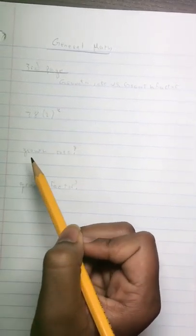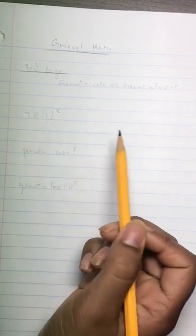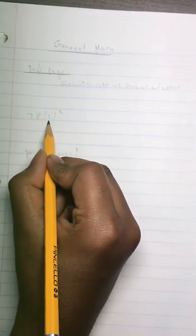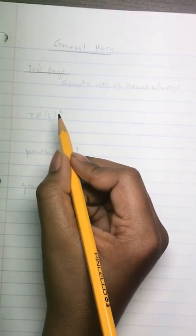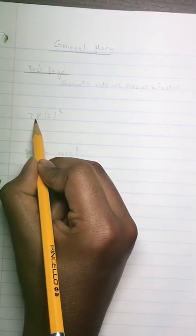Without further ado, let's delve in. The growth rate is what's being added to what we already have to make the new one. So in here, you're multiplying something by 2, so basically you're adding another version of 78.